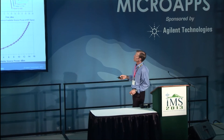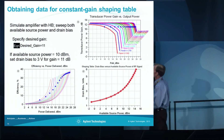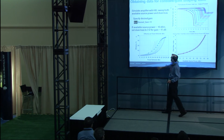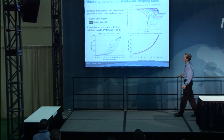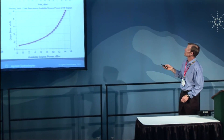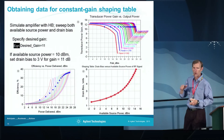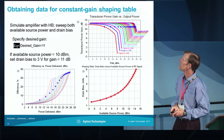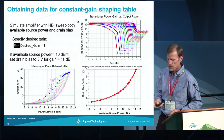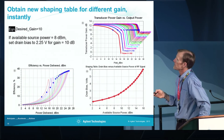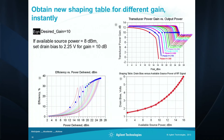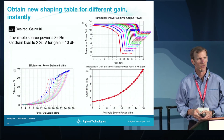This curve shows where these operating points are on the efficiency versus power delivered curve. At 11 dB gain, we're only slightly into compression, so we're not operating at a very high level of efficiency. If we change the desired gain to 10 dB, we're further into compression and get a slightly higher efficiency versus power delivered. It's easy to create these different shaping tables and run different simulations using them.